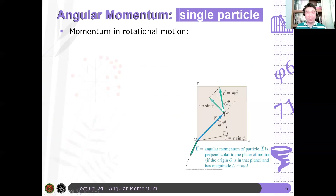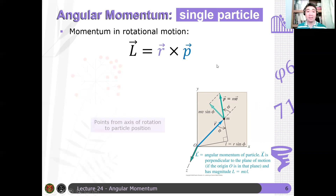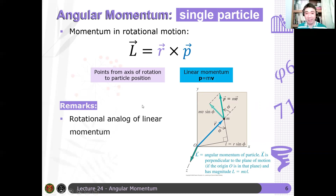Angular momentum is the rotational equivalent or rotational analog of linear momentum. We defined it that way: L = r cross p, where r is the point from the axis of rotation towards the position of the particle, and p is, of course, your usual linear momentum. It has units of kilogram meter squared per second. It has no specific name — similar to linear momentum, there is no specific unit name for angular momentum.